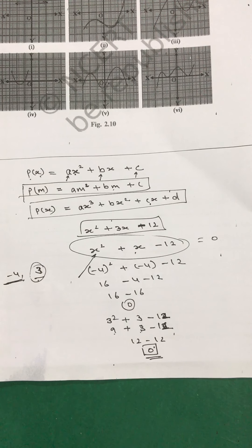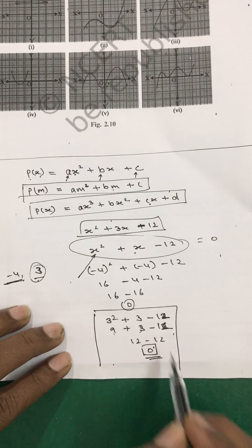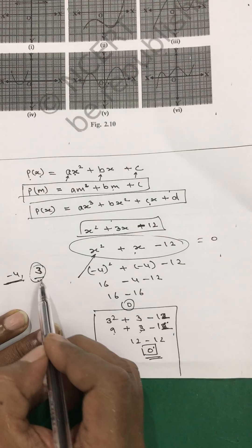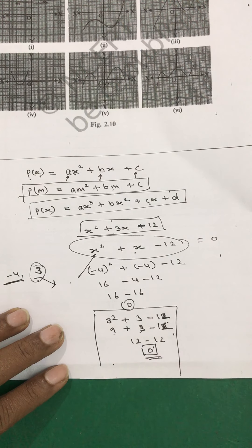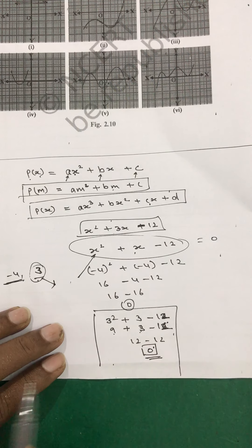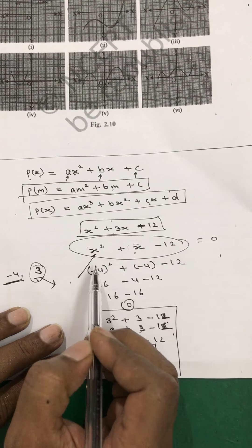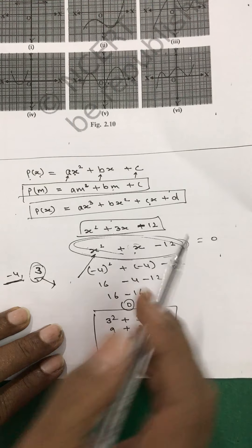Mistakes happen, but you have to understand when something is going wrong — and for that, logic is needed. At present, just understand that a zero is the value we substitute in place of x so that the polynomial becomes 0. That is the meaning of a zero when working algebraically.